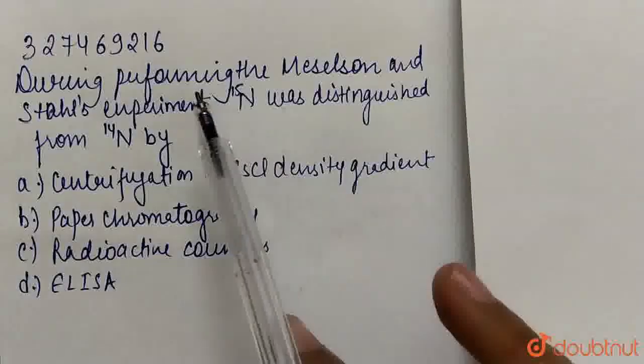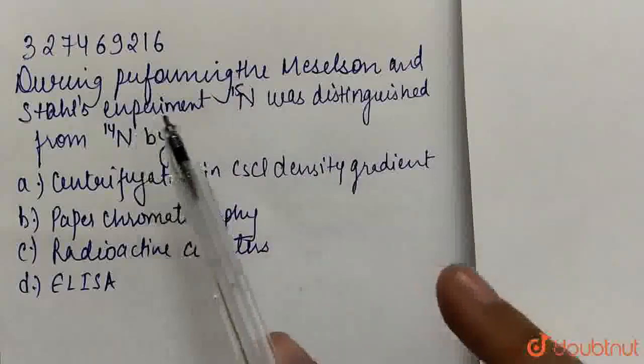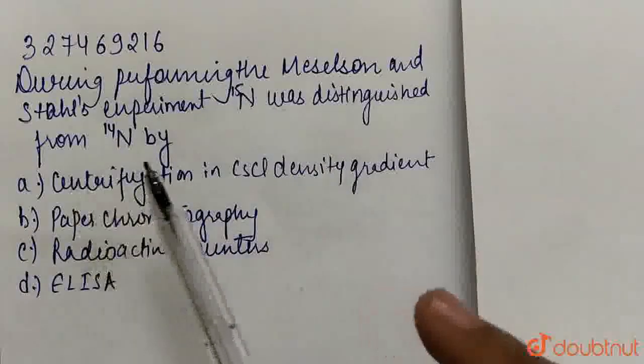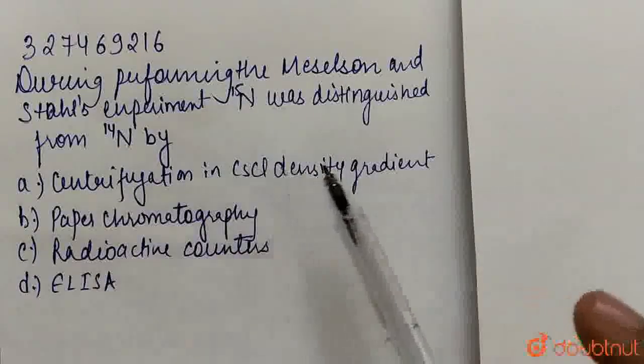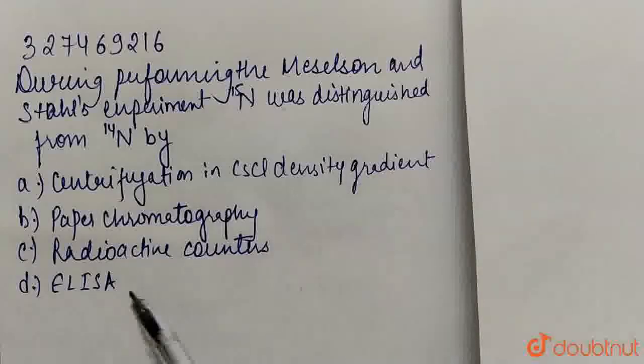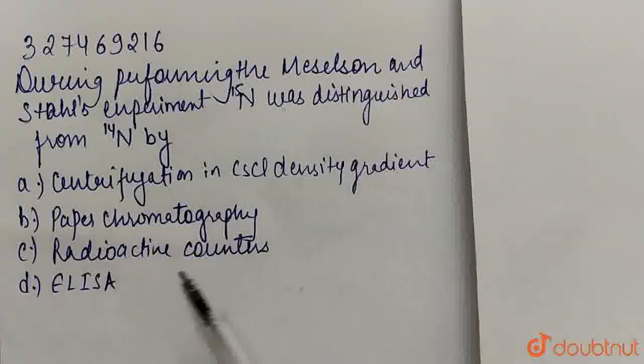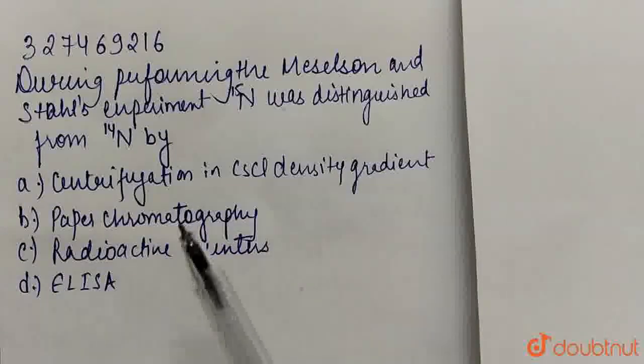Welcome! So the question is: During performing the Meselson and Stahl's experiment, N15 was distinguished from N14 by A. Centrifugation in Cesium Chloride Density Gradient, B. Paper Chromatography, C. Radioactive Countess, D. ELISA.